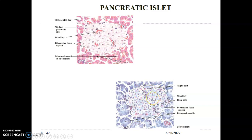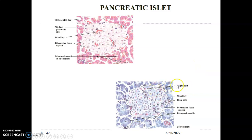The islets of Langerhans contain different cell types: alpha cells that produce glucagon, beta cells that produce insulin, delta cells that produce somatostatin, G cells that produce gastrin, and PP cells that produce pancreatic polypeptide. You can appreciate the labeled alpha and beta cells, presence of capillaries, and the islet is secluded from the exocrine pancreas by a capsule.